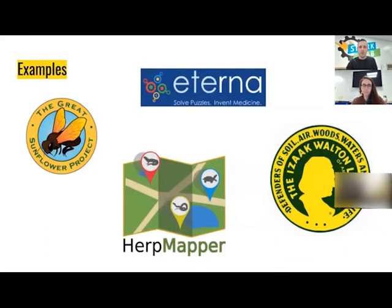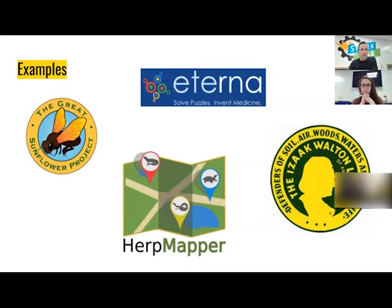Some examples of programs that you can find: there is the Great Sunflower Project, which all you need to do is observe a flower for five minutes and report how many pollinators visit. They're trying to study the migration of pollinators around the country, so all you have to do is find a sunflower or anything that attracts pollinators, look at it for five minutes, and say how many bees, butterflies, and insects come to visit.